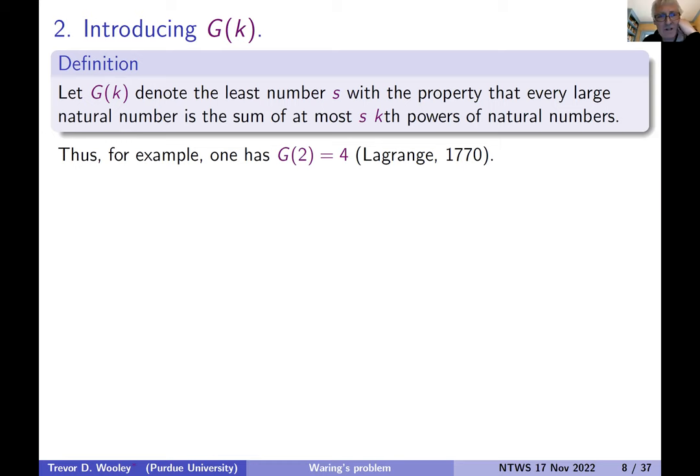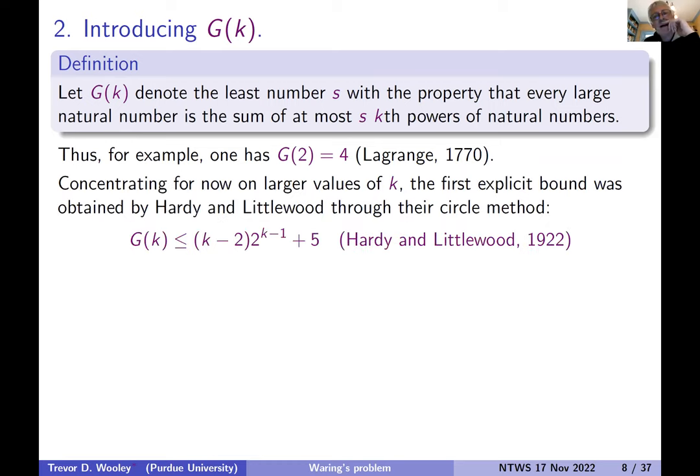The first modern contribution to the subject comes with Hardy and Littlewood's work a century ago. So they showed that an upper bound of magnitude G of k is at most something roughly k times two to the k.